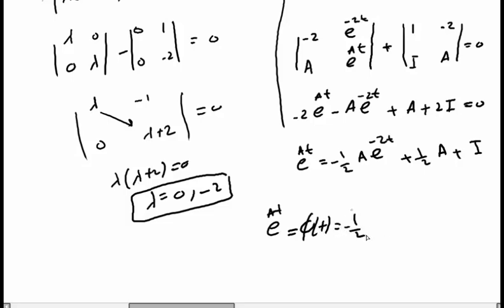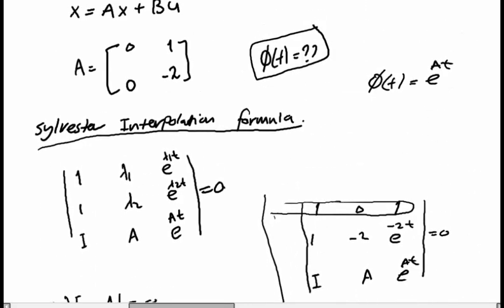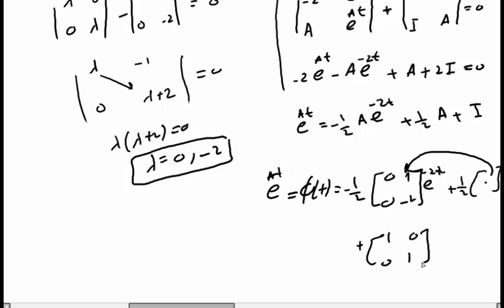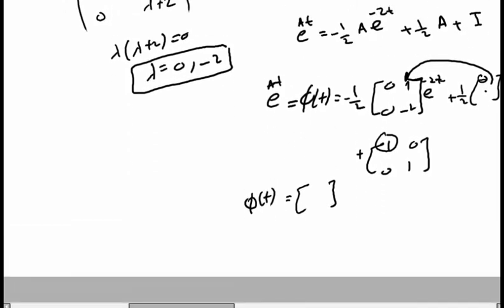So Φ(t) = e^(At) equals: −½ times A (which is the matrix [0, 1; 0, −2]) times e^(−2t), plus ½ times A, plus I (the identity matrix [1, 0; 0, 1]). We add all these together to find Φ(t).